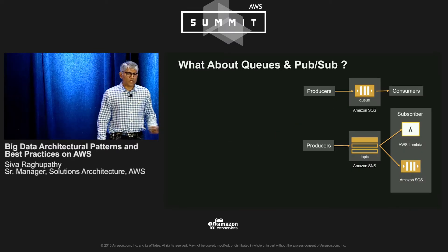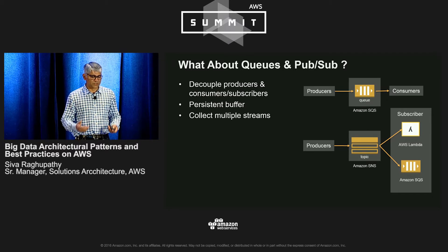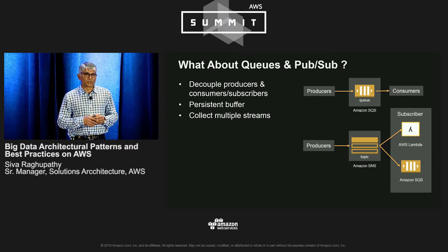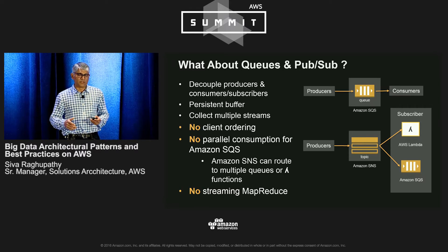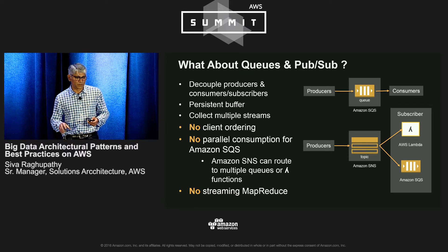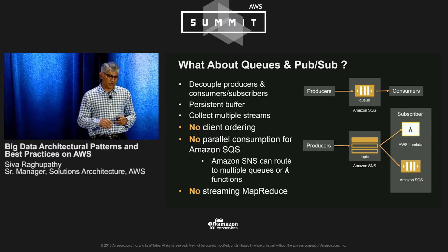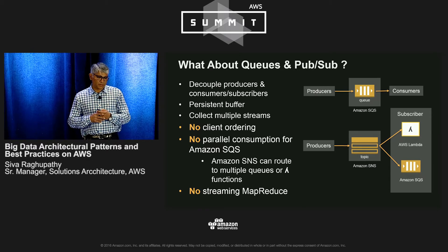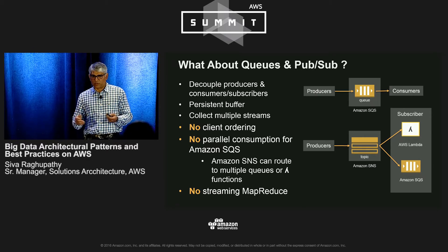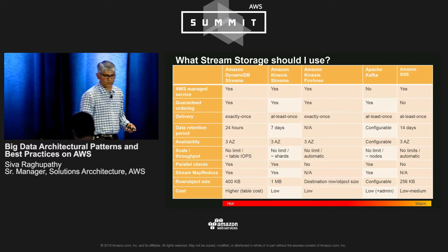What about queues and PubSub? Queues like SQS allow you to decouple systems, provide a persistent buffer, and collect multiple streams of data. But what they don't have is client ordering guarantee, parallel consumption, or streaming MapReduce. One exception: if you write into SNS, you can route messages into multiple queues and enable parallel consumption. But this is essentially the difference between queues and streaming storage systems.